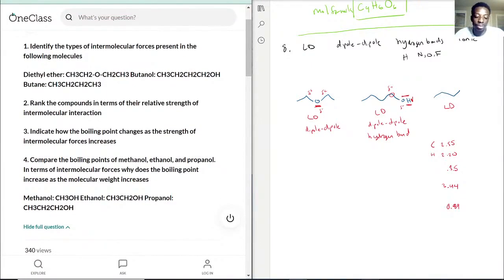In terms of the relative strength of intermolecular interaction, as discussed, hydrogen bonds are stronger than dipole-dipole, which is stronger than London dispersion. So in terms of their relative strength, this right here is the strongest, this right here is the weakest, and this is the one in the middle. That answers number two.